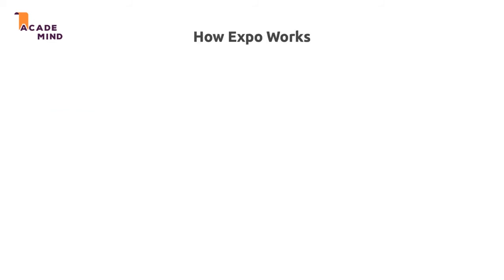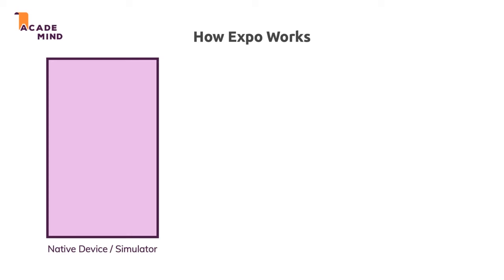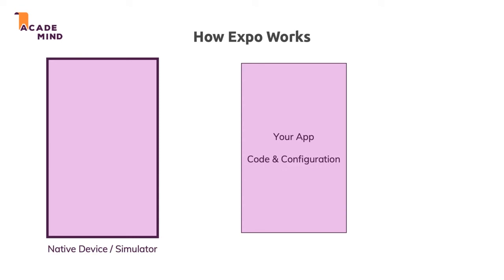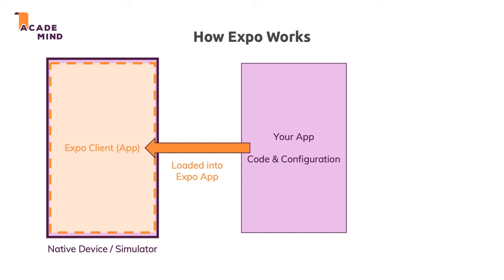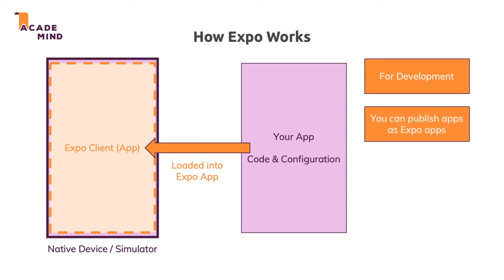Behind the scenes, Expo works like this: you have your native device or simulator — your iPhone or Android phone — and you write your React Native app in JavaScript. On your native device or simulator, you install an extra app from the app store called the Expo client app, which we'll do together in the next lecture. Your app is then loaded into that client app to run and test it there, which is great for development.